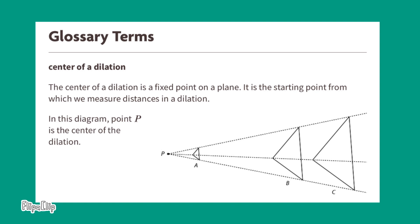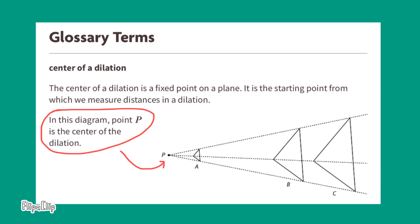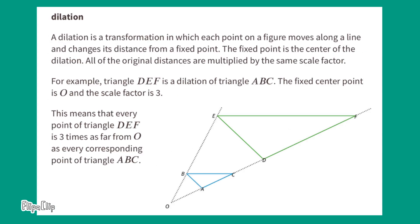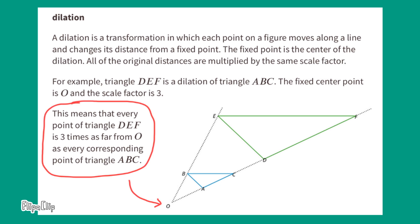In this diagram, point P is the center of the dilation. A dilation is a transformation in which each point on a figure moves along a line and changes its distance from a fixed point. The fixed point is the center of dilation. All the original distances are multiplied by the same scale factor. For example, triangle DEF is a dilation of triangle ABC, the fixed center point is zero, and the scale factor is three.